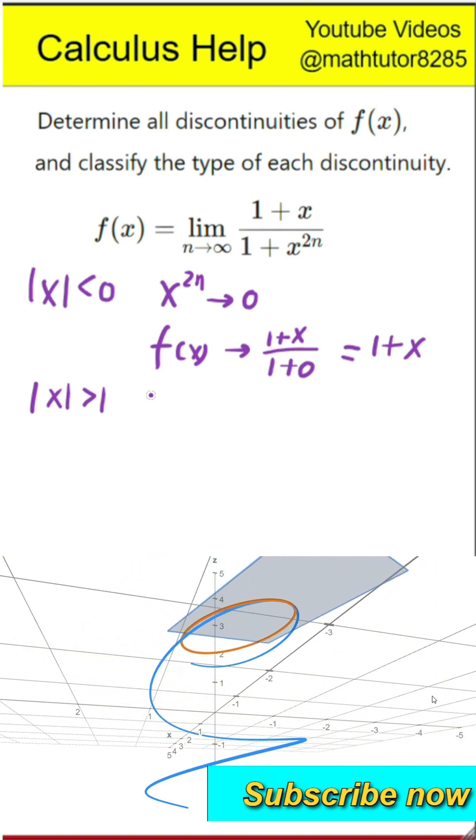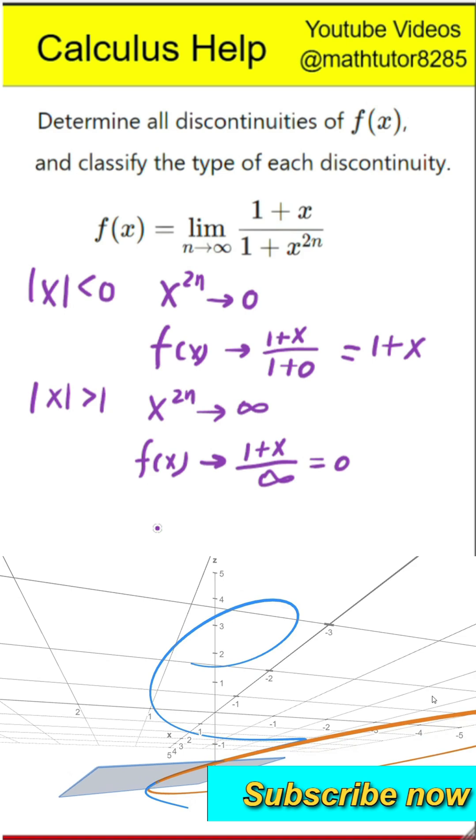Second, when the absolute value of x is greater than 1, then x to the power 2n grows very large, making the denominator extremely large. So the entire expression approaches 0.